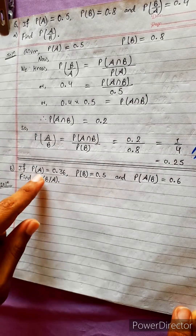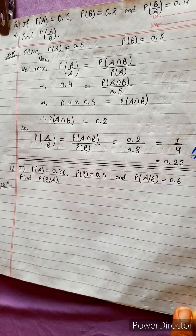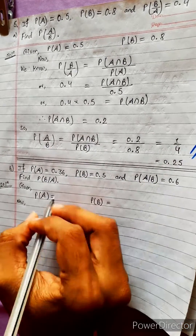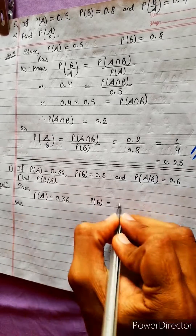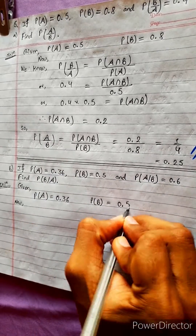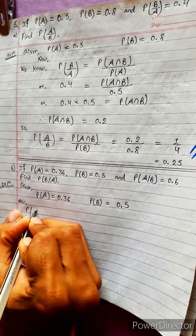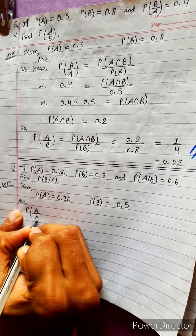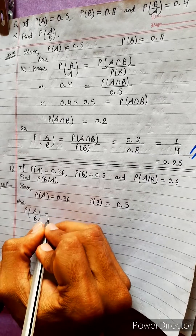The first thing we have given is P(A) = 0.36, P(B) = 0.5, and P(A|B) = 0.6.